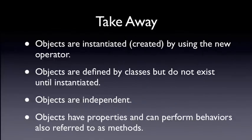So here are some takeaways. Objects are instantiated by using the new operator. Objects are defined by classes, but do not exist until instantiated — we have a class that defines an object, we call new on it, and it builds an object to do our bidding. Objects are independent — each object is independent of another object. My computer right now is recording a video; your computer is not recording a video. And what is an object? An object is an item in software that has certain properties and can perform certain behaviors for us — and we'll refer to those behaviors in their technical term, which are methods.